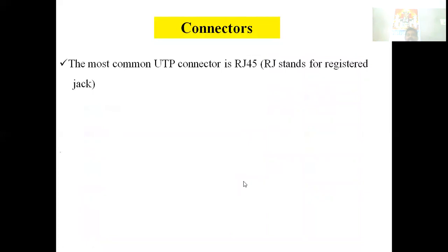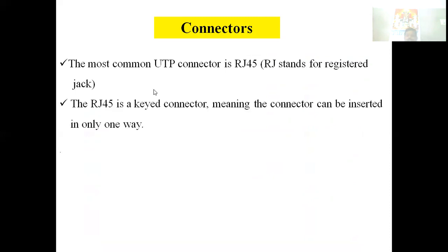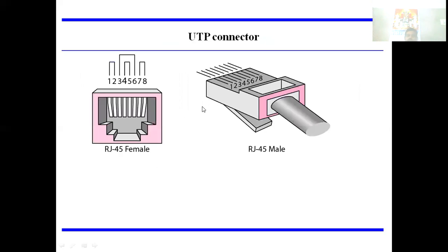The connector used for unshielded twisted pair is RJ45, where RJ stands for registered jack. The RJ45 is a keyed connector, meaning you can insert it only one way.